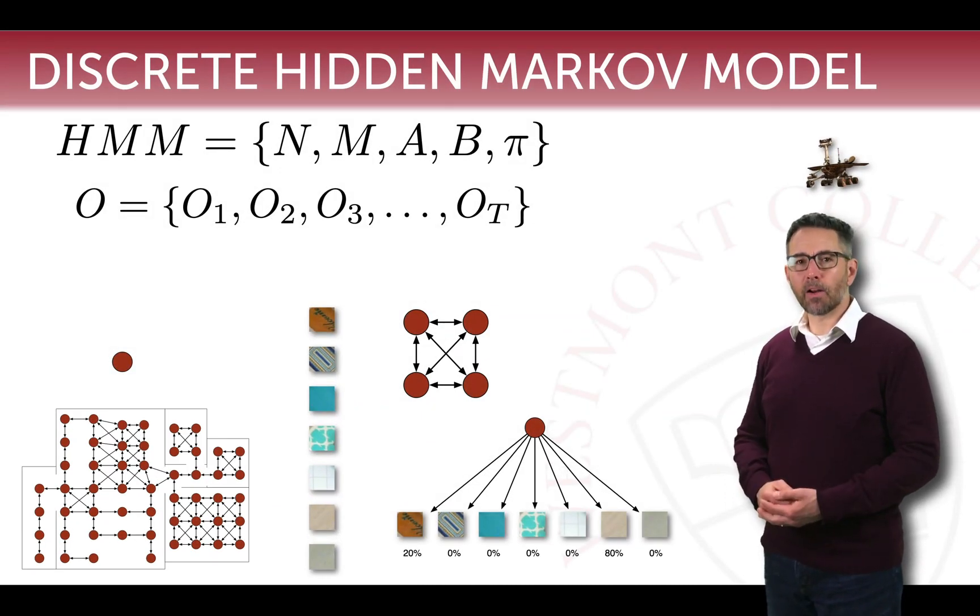If you'll recall, a hidden Markov model consists of five different parameters: n, m, a, b, and pi.